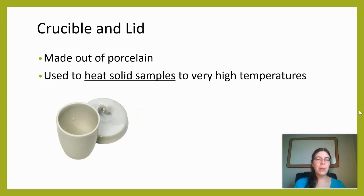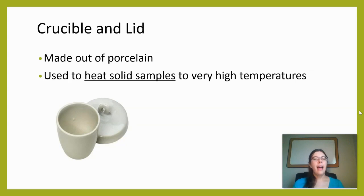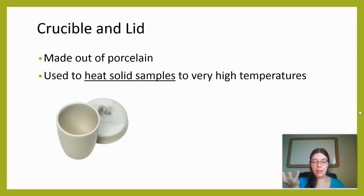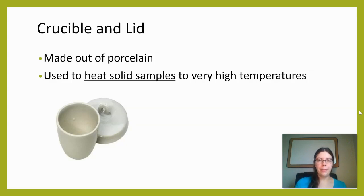Something we often use with Bunsen burners are crucibles and lids. The crucible is the bowl shape, and the lid goes on top. These are often made out of porcelain, meaning they're very fragile and break easily. They're used to heat solid samples to very high temperatures — you put the solid into the crucible and place the lid on top, which prevents oxygen from getting in.